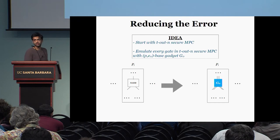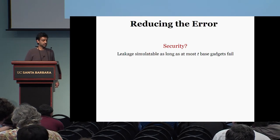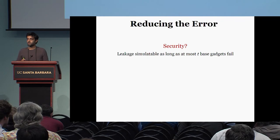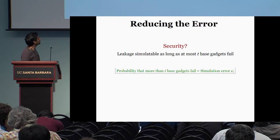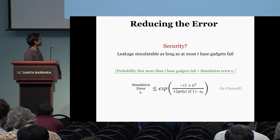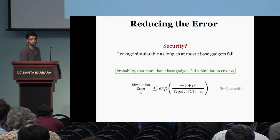To reduce the error, the idea is as follows: start again with a T-out-of-N secure MPC protocol and replace every NAND gate in this protocol with a base gadget, then stitch all the gadgets together. The resulting gadget D1 is secure as long as at most T base gadgets fail, which corresponds to corrupting at most T parties in the MPC protocol. The simulation error expression is the same as before except P is replaced with E0, giving E1. By suitably setting the parameters you can show E1 is smaller than E0, so you achieve some progress.